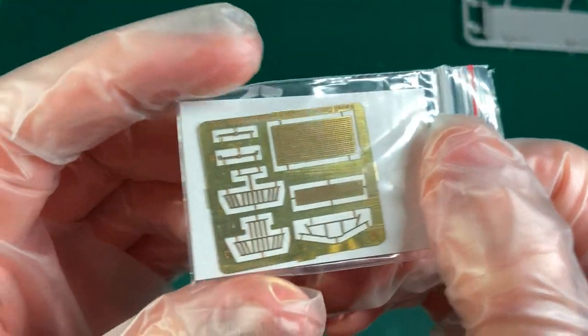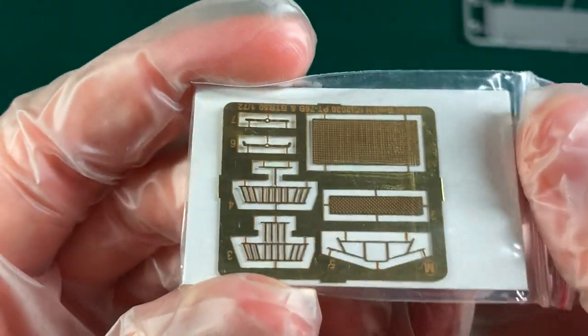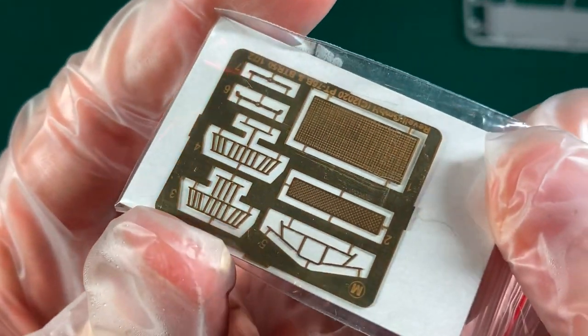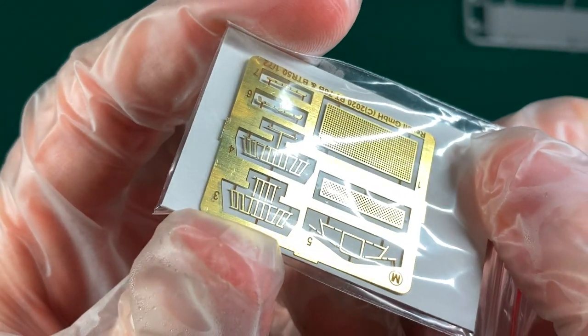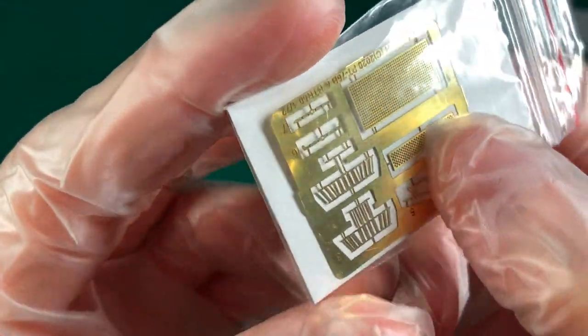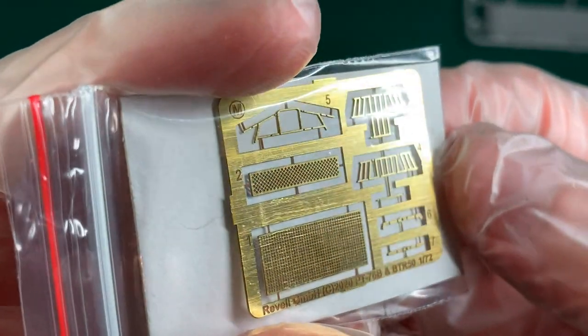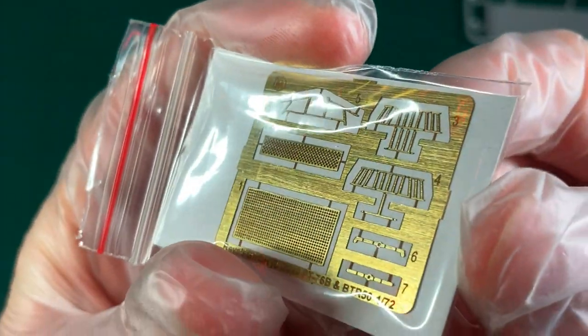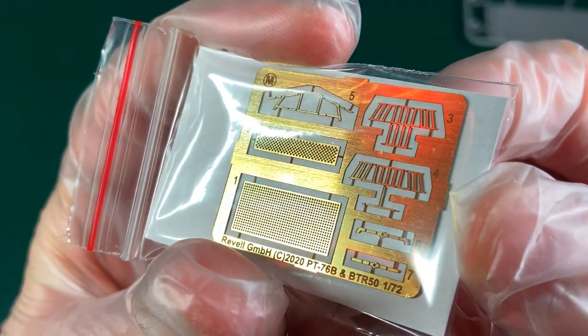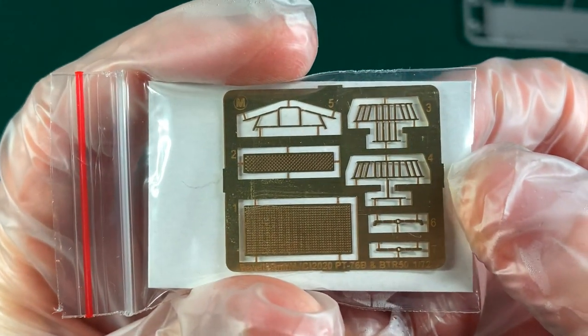And lastly we have some photo etched parts. The only issue I have is the challenge that it's going to be to build the light covers which you can see there. Obviously if you follow the instructions carefully and don't be too heavy handed, you should be able to fit it into the right position.